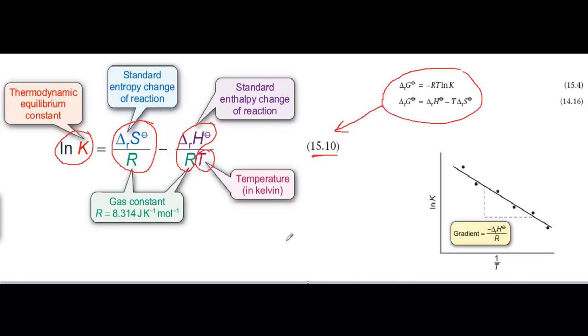Now for an endothermic reaction, delta H is positive. When T increases, the minus delta H over RT term becomes less negative, which means that K increases, showing that the equilibrium position moves to the right, as Le Chatelier's principle predicts.